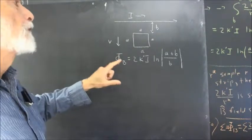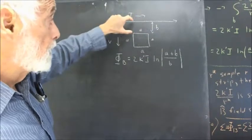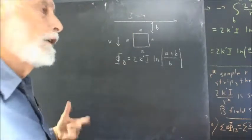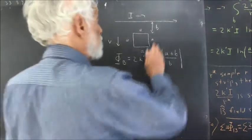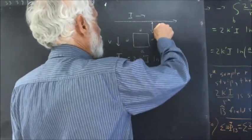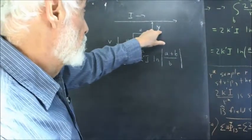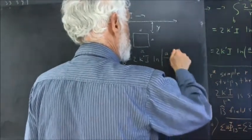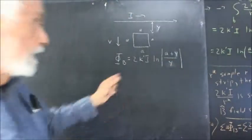First of all, what's the flux when it's at position y — when its distance from here to here is y? And what's the induced voltage, which would be the rate of change of the magnetic flux? If the distance is y, I'm going to go ahead and change this b to y and consider this to be what varies with v, so that my expression for the flux becomes this.